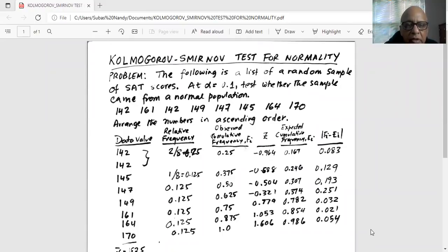So the data set consists of the following points: 142, 161, 142, 149, 147, 145, 164, and 170. So first we have to arrange the numbers in ascending order from the lowest to the highest. Note there are two 142, then the next one is 145, then 147, 149, 161, 164, and the last highest data point is 170.